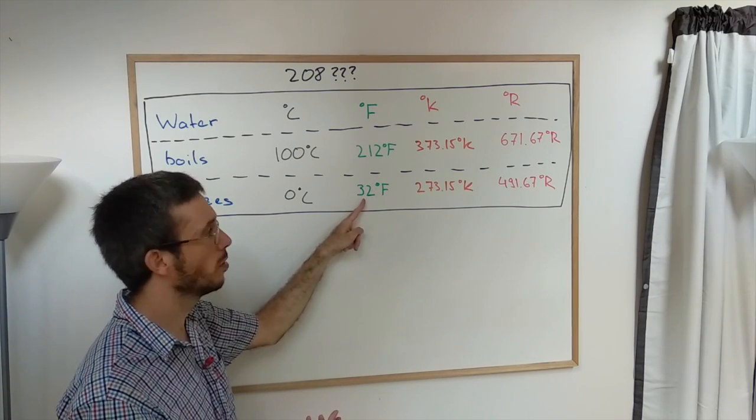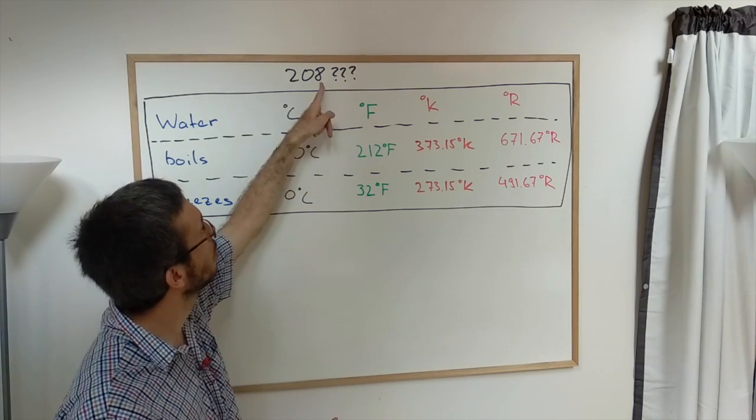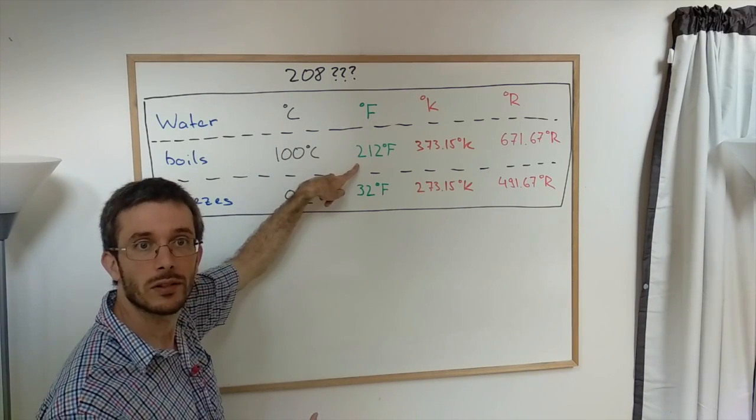Let's look at Fahrenheit. We have freezing at 32, boiling at 212. 208 could be Fahrenheit, right?